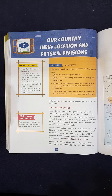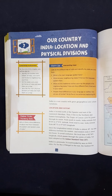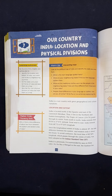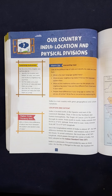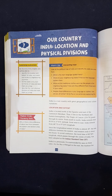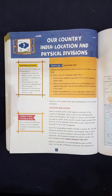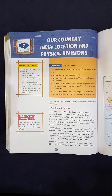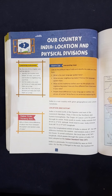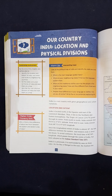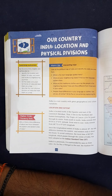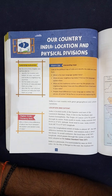We divide the earth with some important lines such as the equator, Arctic Circle, and Antarctic Circle. The equator is denoted as zero degrees. The Arctic and Antarctic Circles are denoted as 66 and a half degrees north and south. There are two more lines - the Tropic of Cancer and Tropic of Capricorn - denoted as 23 and a half degrees north and south. India lies in the northern hemisphere and the eastern part of the globe, starting from Greenwich.